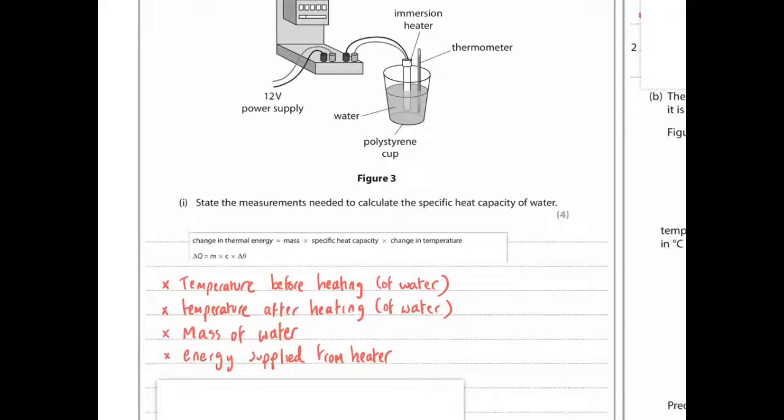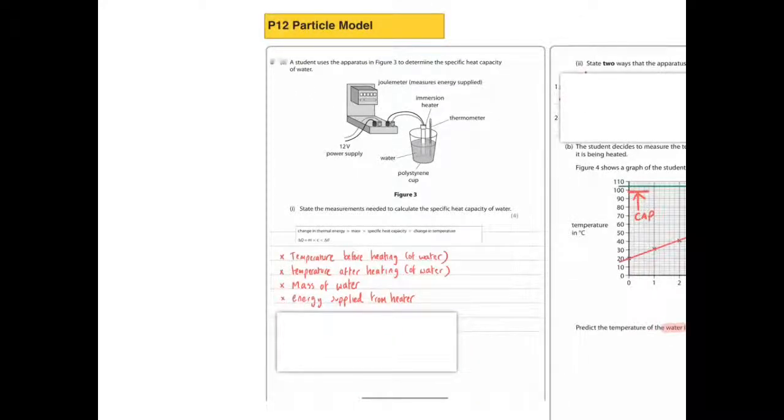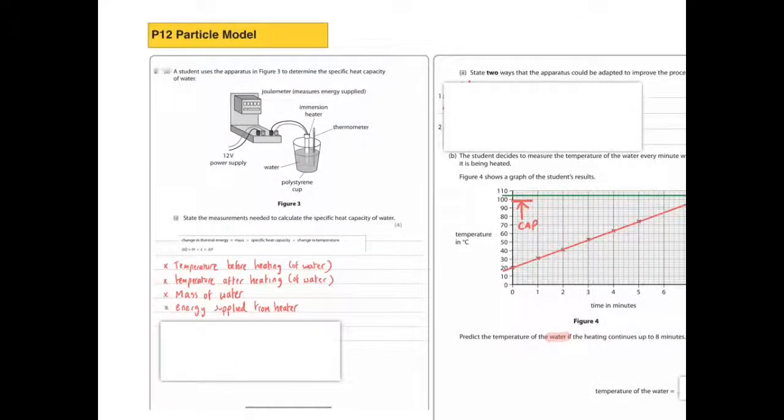And energy supplied from the heater. So these are the things you need to basically relate to the equation. Energy supplied by the heater, temperature change, and mass. So this again, it seems complicated, but if you just use logic and use the equation, you can actually answer it quite easily. It's for four marks, so you should be able to get at least three out of the four quite easily.